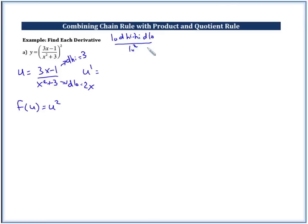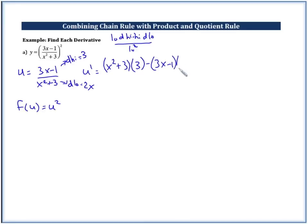We need to be working on memorizing this. So our low function x squared plus 3 times d high — the derivative of high is 3 — minus the high function 3x minus 1, times the derivative of our low function which is 2x, all over our low function squared.